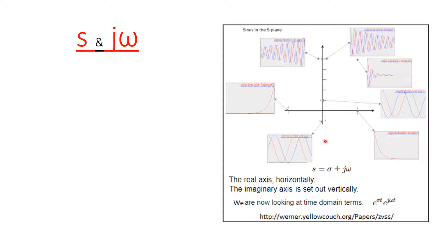The s-domain is represented here with a real axis and an imaginary axis. S is given by s = α + jω, where the horizontal axis is α and the imaginary axis is jω. This can be thought of as e^(αt) multiplied by e^(jωt). Depending on whether α is positive or negative, this axis represents exponential decay or growth, while the vertical axis represents sinusoidal oscillation, since e^(jωt) represents sine or cosine.